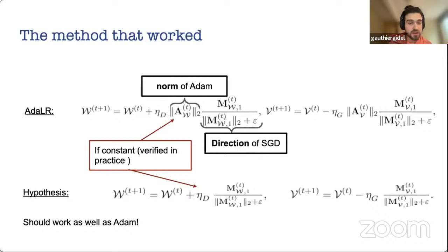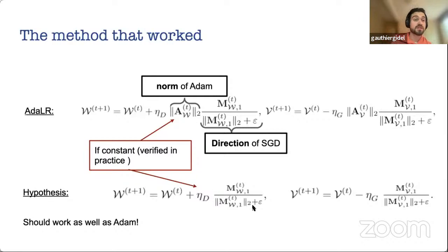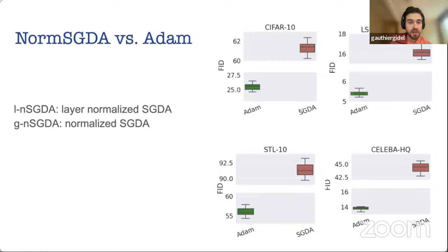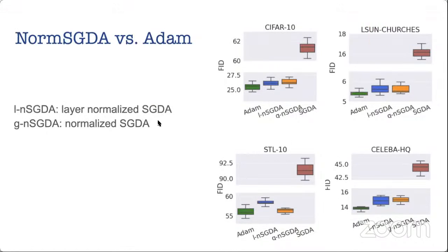We tried normalized SGD in two slightly different variants and were able to match, with minimal tuning, the performance of Adam across four datasets. The conclusion is not that normalized SGD is a proxy for Adam, but that Adam was implicitly doing what normalized SGD does. This is much more satisfying from an optimization perspective — normalized SGD is far easier to analyze than Adam in the game setting, and we can provide convergence guarantees.